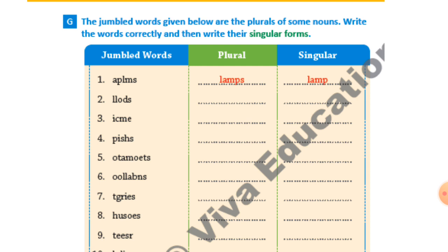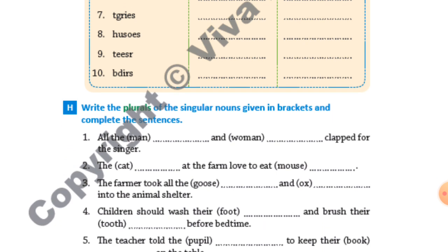Ninth one: T-R-E-E-S — so 'trees' and singular is 'tree'. Last one: B-I-R-D-S — so 'birds' and singular is 'bird'. Let's go with the last exercise.